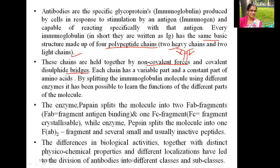Each chain has a variable part and a constant part of amino acids. The variable part is at the amino terminal tip of the immunoglobulin, while the constant part is below it. By splitting the immunoglobulin molecule using different enzymes, it has been possible to learn the functions of different parts of the molecule.